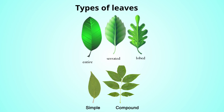Are all the leaves on the earth the same? Of course not — we have different types of leaves. Entire means a little bit wide and smooth. Serrated has a spiny shape from the sides. Looped is divided into many parts. Simple is only one leaf, thin and smooth. Compound means the leaf is divided into many leaves on the same branch.